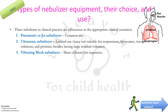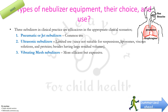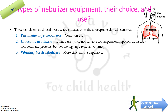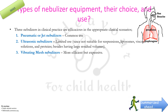There are three types of nebulizers. The first and most commonly used is the pneumatic or jet nebulizer. The second type is ultrasonic nebulizers, which have limited use since they are not suitable for suspensions, liposomes, viscous solutions, and proteins, and also have large residual volumes.